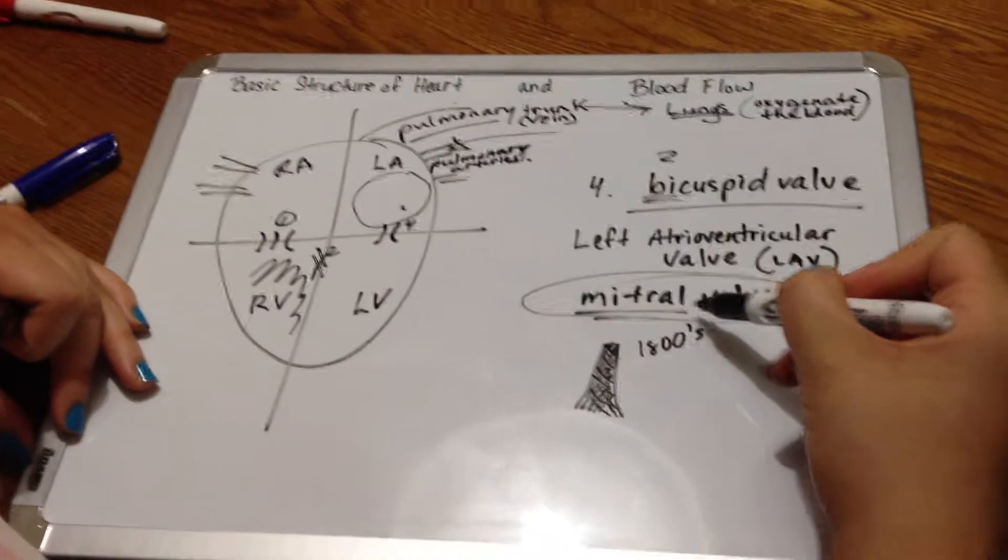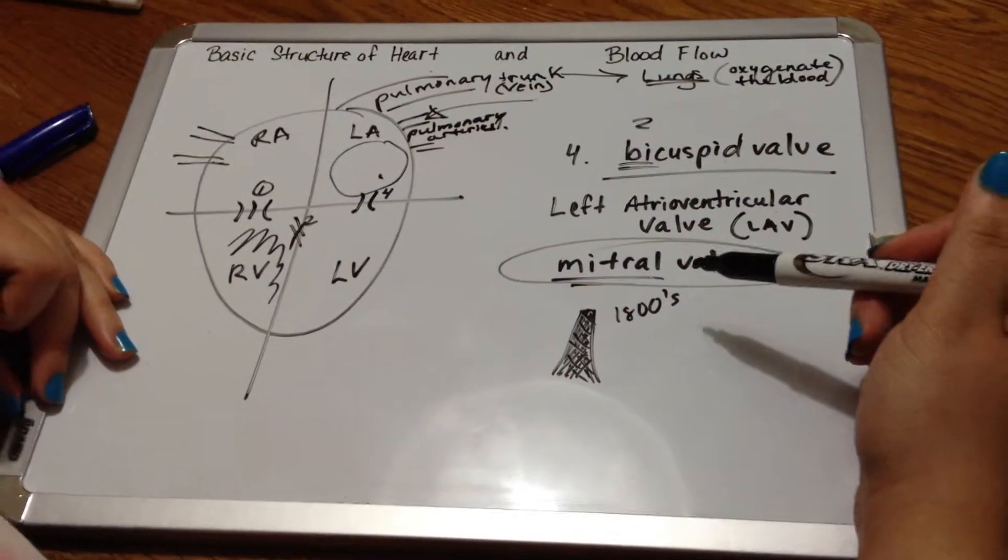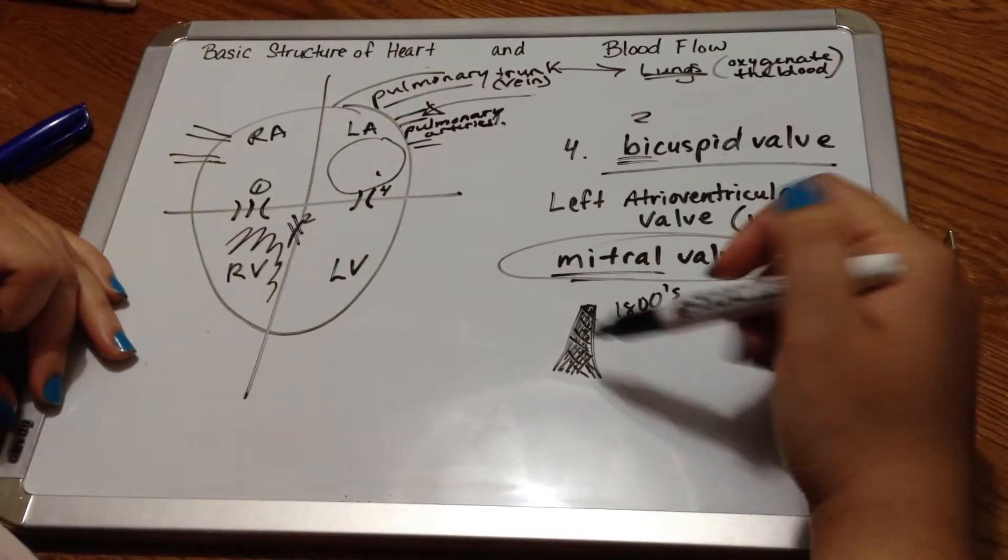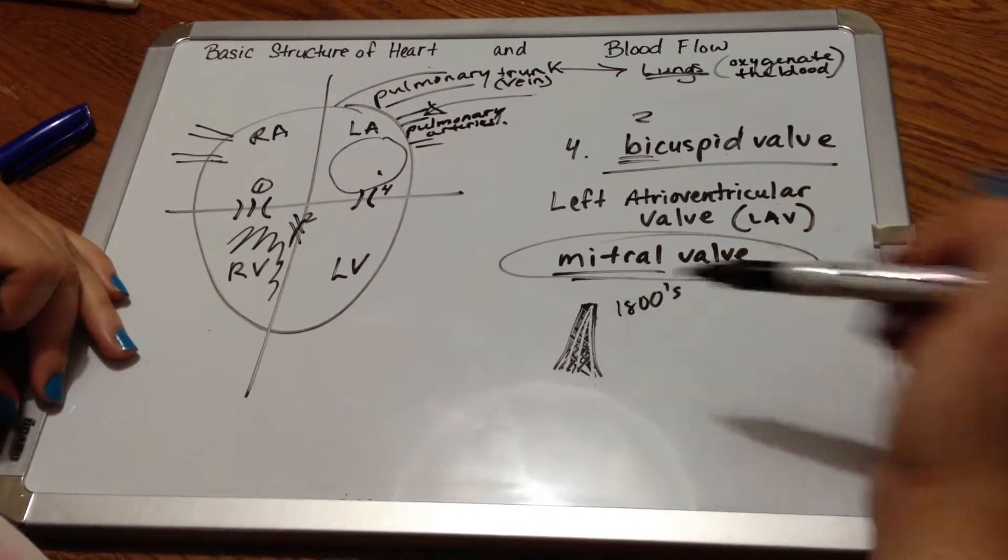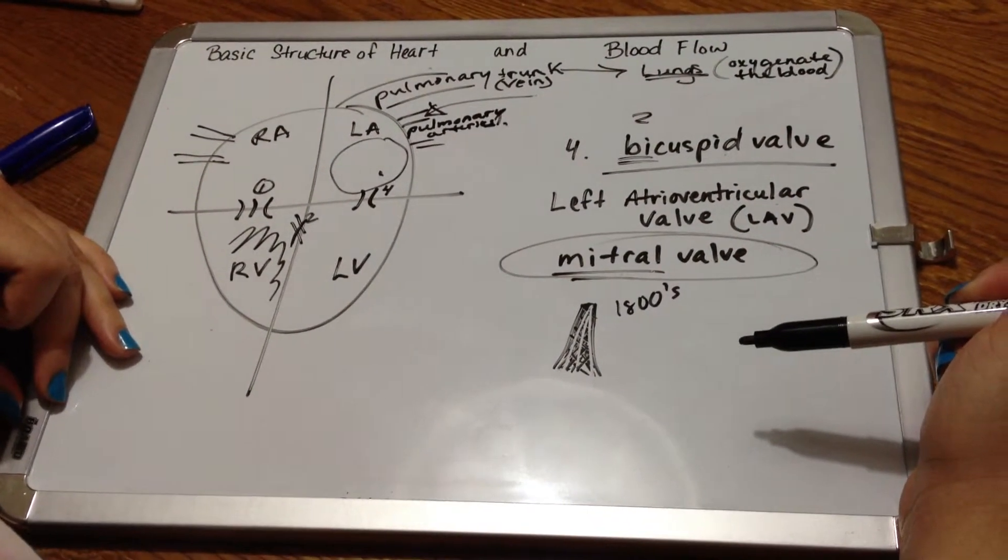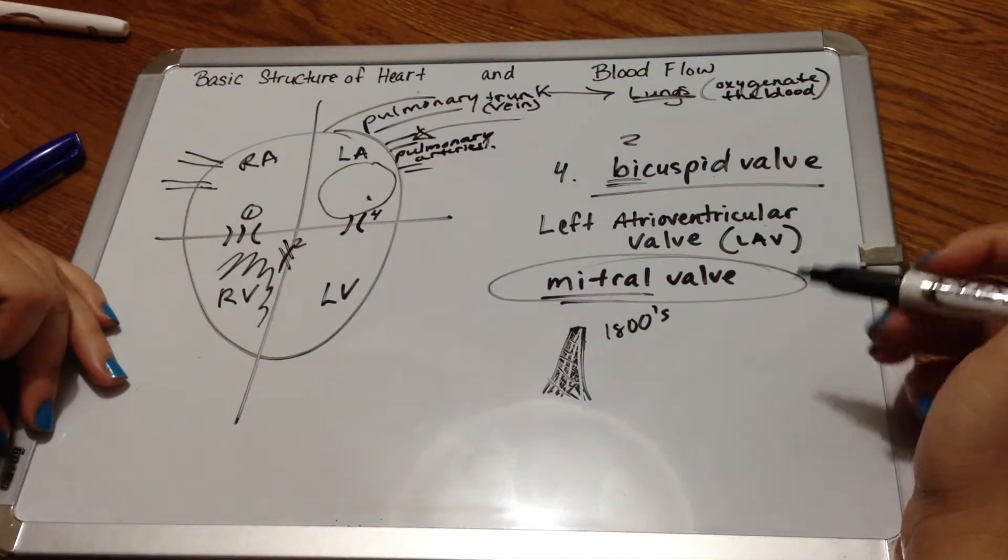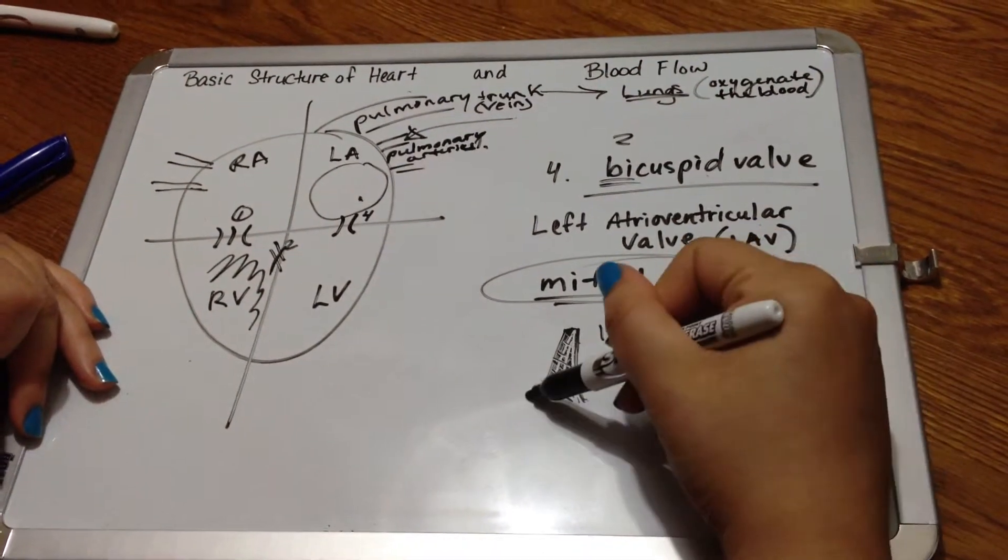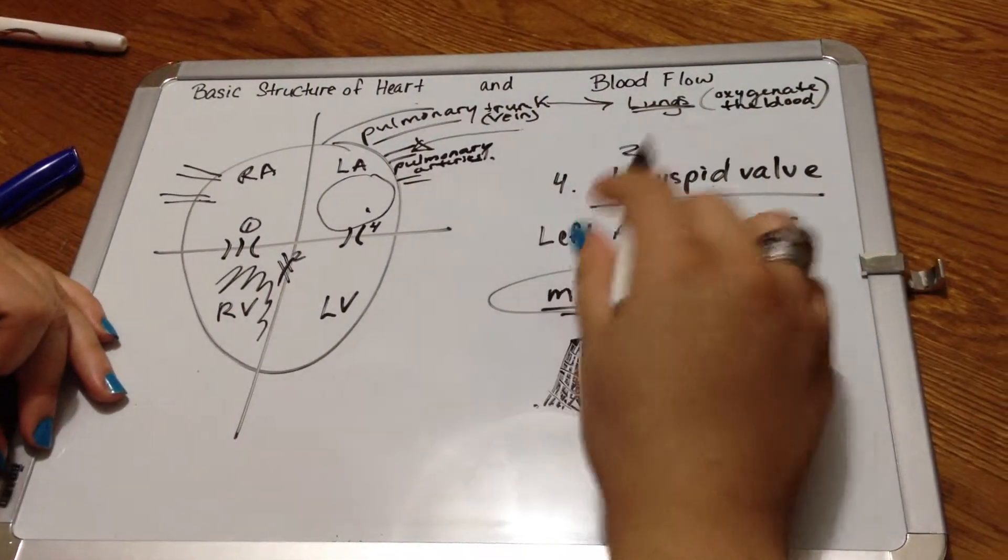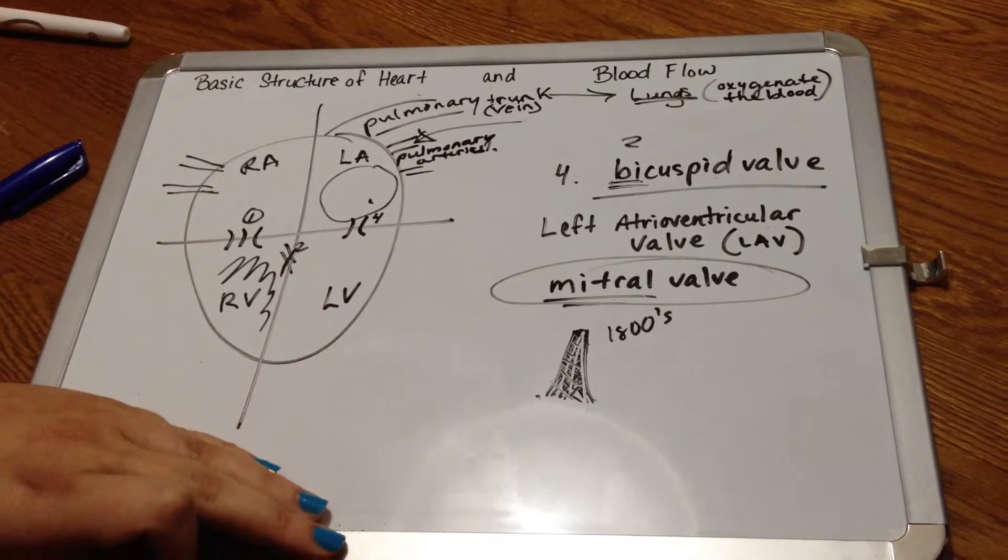So if you ever get the opportunity to actually look at the bicuspid valve, it kind of looks like a veil with a different little tendinase, and they tend to go into two attachment sites because it is bi after all.